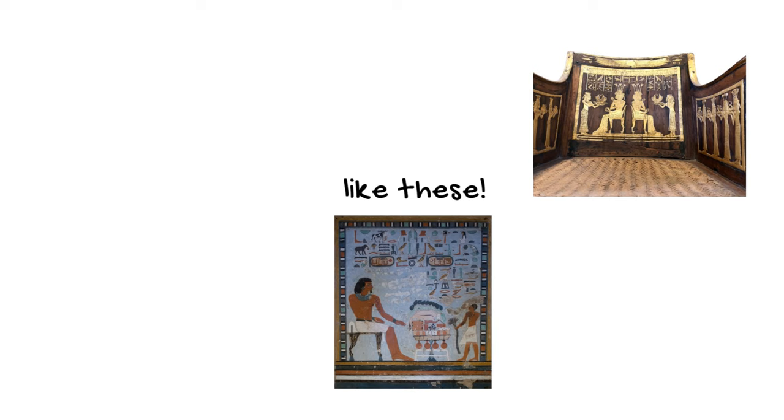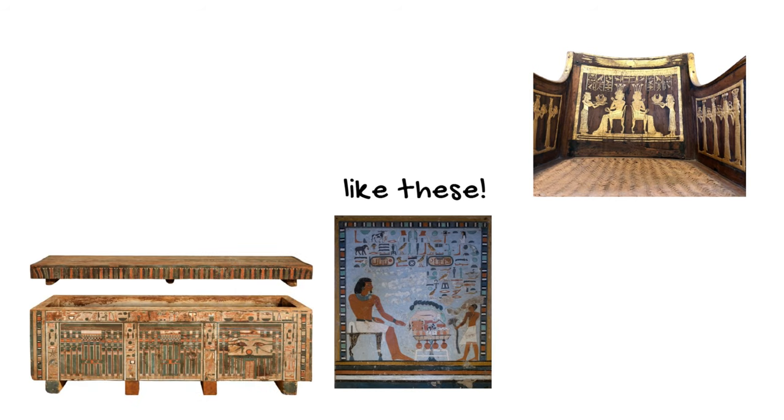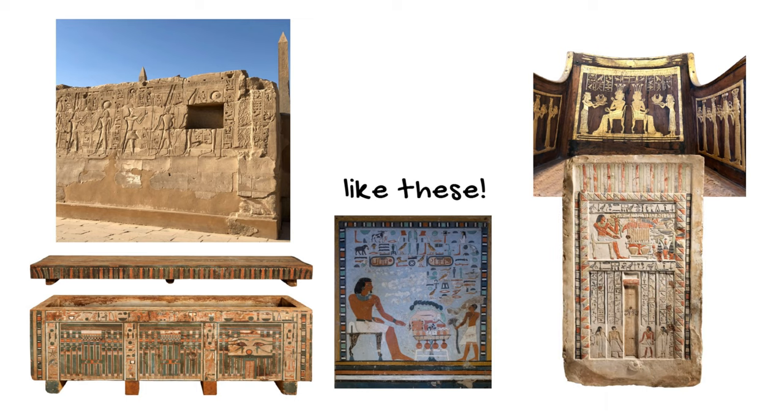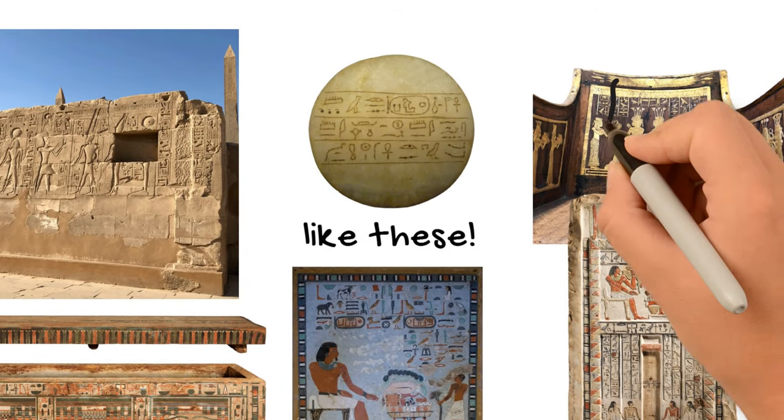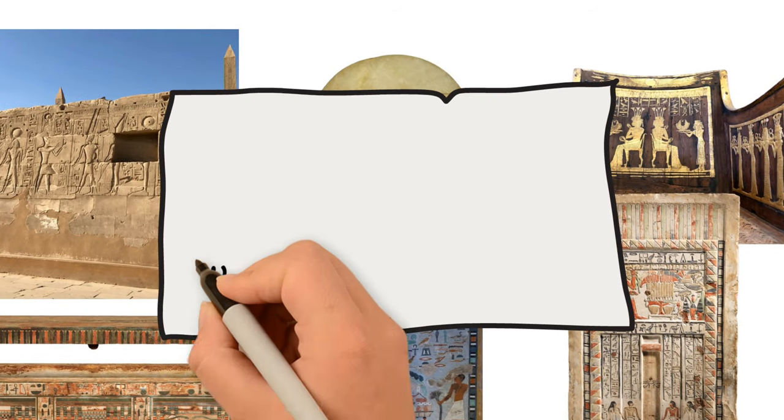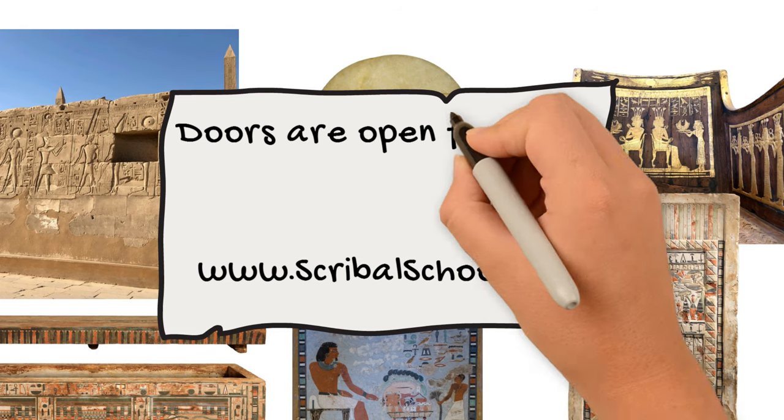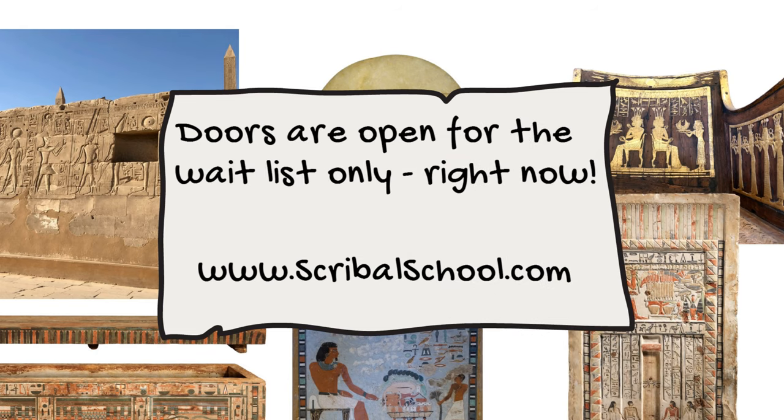And Scribble School will take you from knowing nothing or very little about ancient Egyptian to reading the most common texts that you'll see in museums, on your Instagram feed, or on a trip to Egypt. So to be the first to know when doors open and make sure you get a spot as well as some exclusive bonuses, you'll want to join the VIP waitlist, which you can find at scribalschool.com.